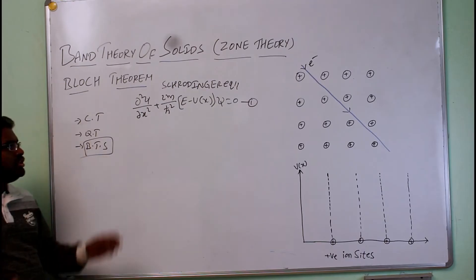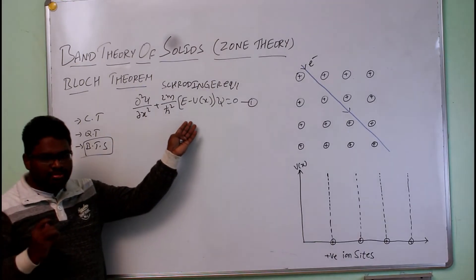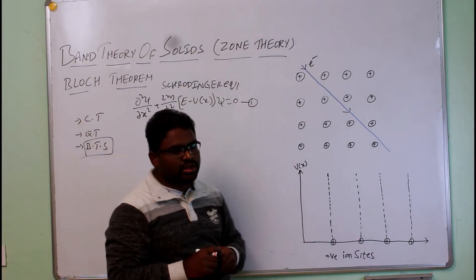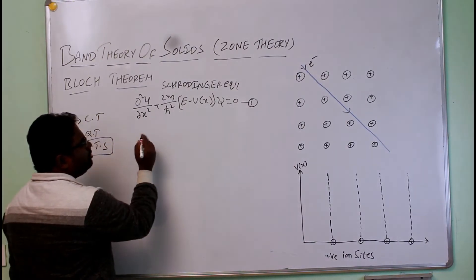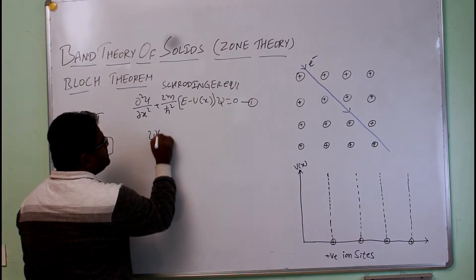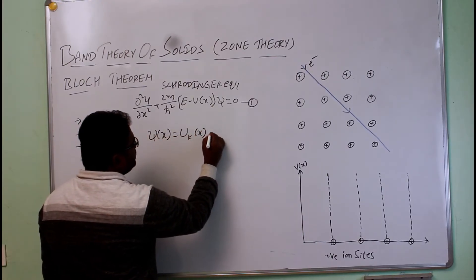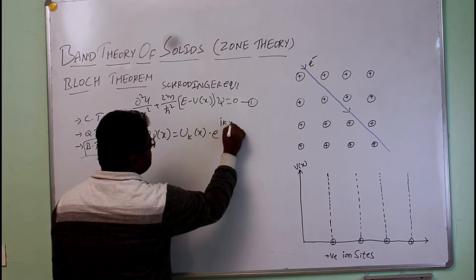According to Bloch, the solution of this particular equation for the electron which is passing through the periodic potential is given by: ψ(x) = U_k(x)e^(ikx).